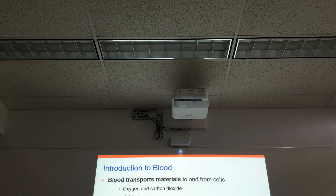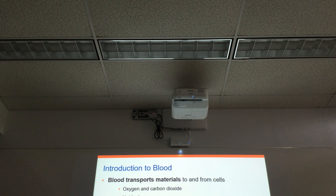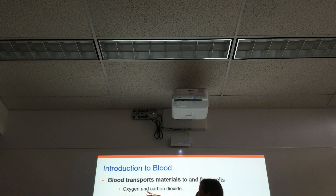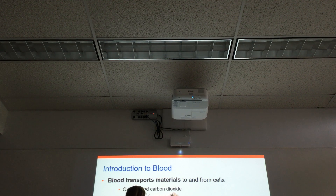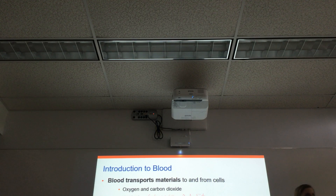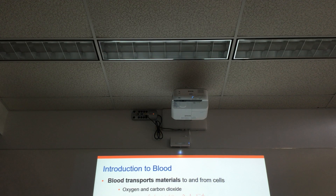Blood is responsible for transporting materials all around the body — bringing things to our cells and carrying things away from our cells. The blood carries things like the respiratory gases: oxygen to the cells and then CO2 away from our cells. It also carries nutrients — things like glucose, amino acids, fatty acids, vitamins — all of these useful things that our cells need to function and have energy and make proteins. Hormones also travel through the bloodstream — those are just chemical messengers that tell cells what to do.